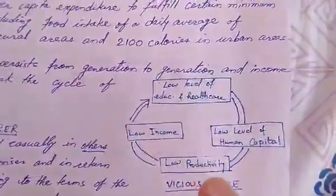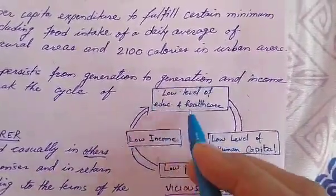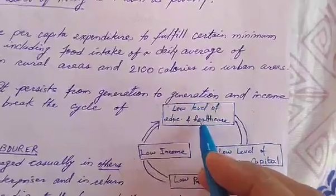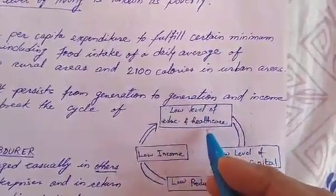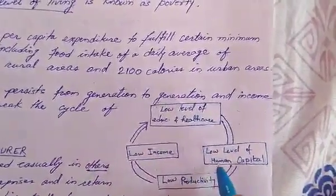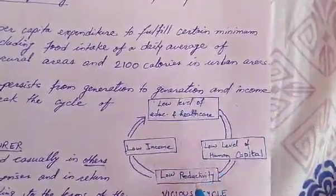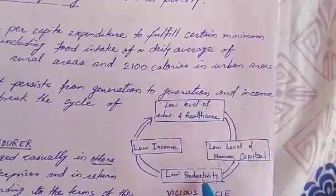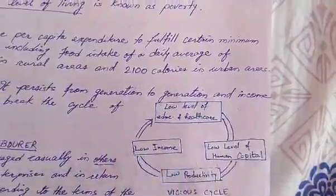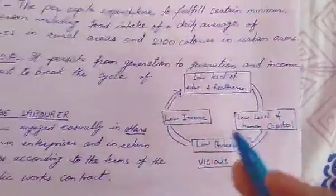Is cycle ko dekhiye: agar vyakti ka low income hai, to low level of education and healthcare hoga — income kam hai to English medium school mein nahi padha paoge, sarkari school mein bhejoge. Koi bhayankar bimari ho gayi to health pe kharcha bhi nahi kar sakta. Phir low level of human capital — education hi nahi hai to capital ki kami hogi, manual labor wagera karenge, low productivity hogi. Aur yeh low productivity → low income ka vicious cycle chalata rehega.